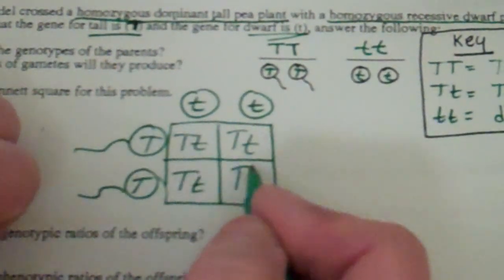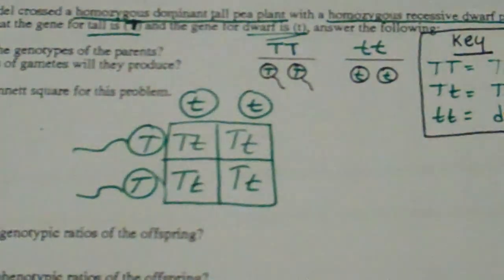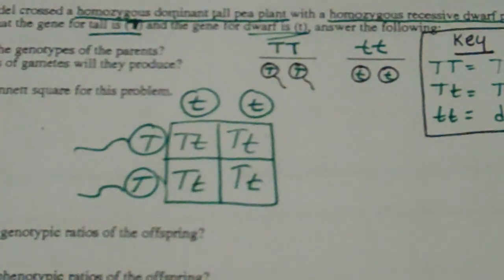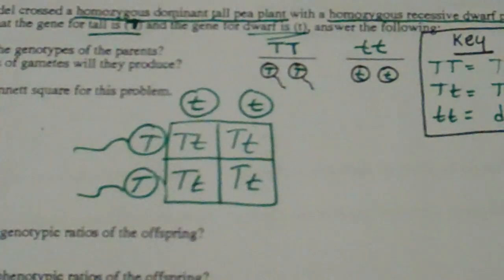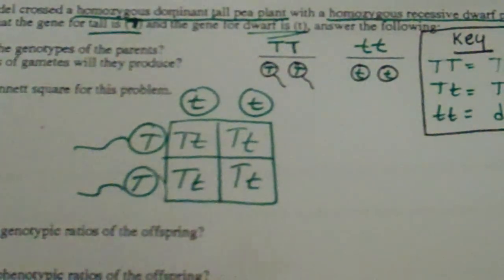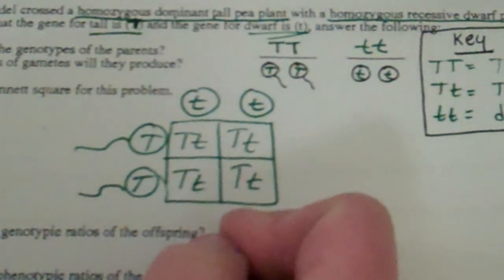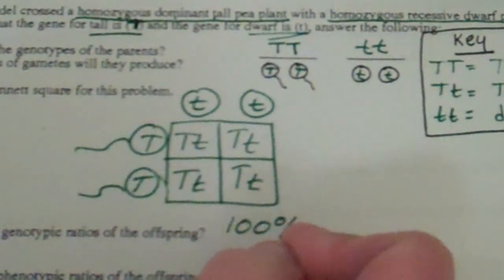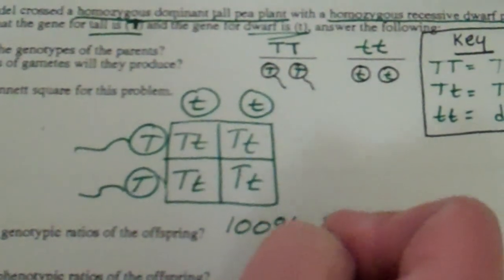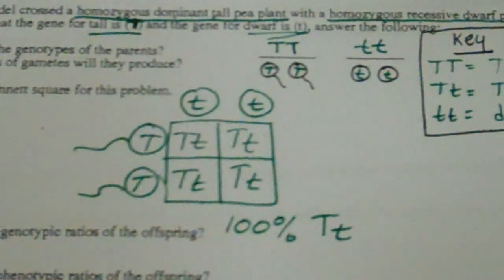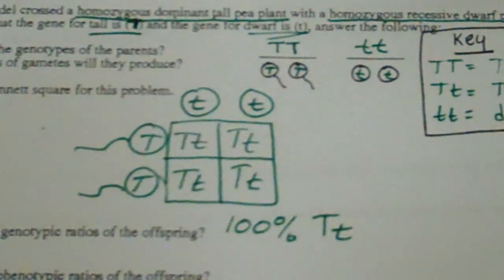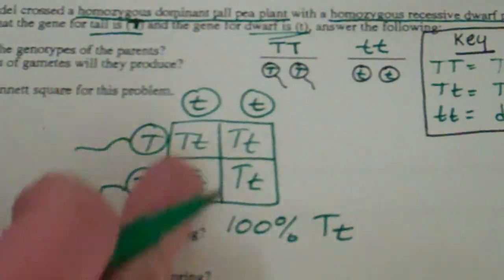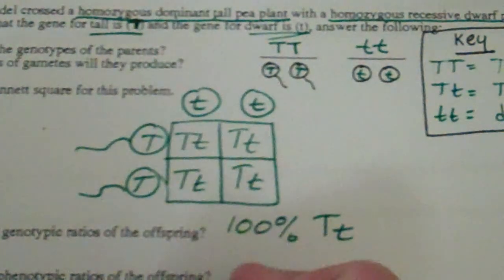Join all of those sex cells. Bring one in, one down: big T little t. Next one, same thing. These two sperm and egg, sperm and egg. All of our offspring are heterozygous for their genotype, all of our offspring are tall. So our genotypic ratio, I'm going to give a percent: 100% of the offspring have the genotype big T little t.